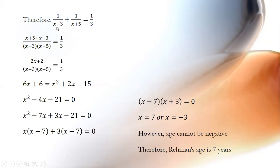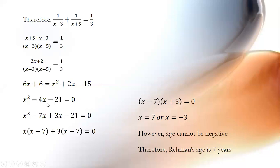The sum of reciprocals of the age before three years and after five years is 1 by 3. We are going to cross multiply. So (x plus 5 plus x minus 3) divided by (x minus 3)(x plus 5) equals 1 by 3, giving us (2x plus 2) divided by (x minus 3)(x plus 5) equals 1 by 3. Cross multiplying, we get 6x plus 6 equals x squared plus 2x minus 15. So x squared minus 4x minus 21 equals 0.